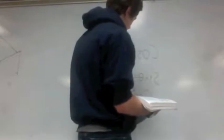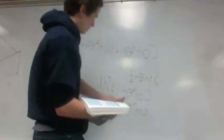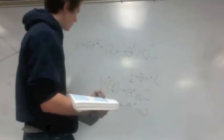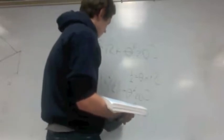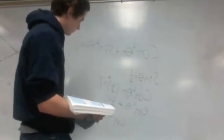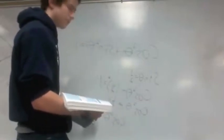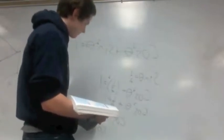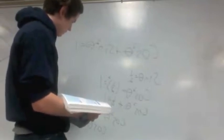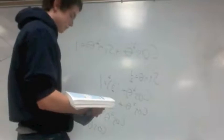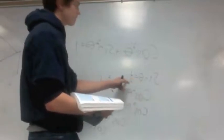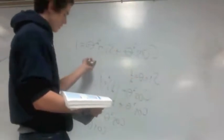Cosine squared theta plus 1/4 — because that's (1/2) squared — is equal to 1. Cosine squared theta is equal to 3/4, subtracting 1/4 from each side. And then cosine theta is equal to the square root of 3 over 2. We take our given number, plug it into the equation, and find our answer.